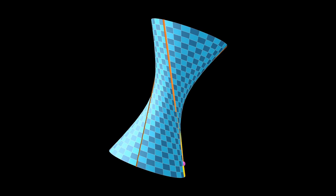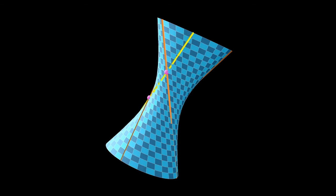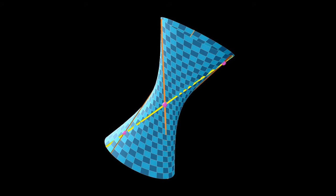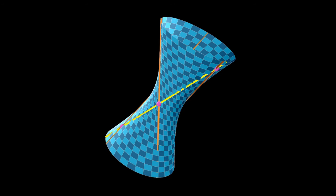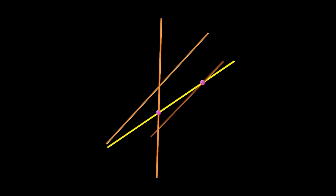Since all three of our given lines are on one of the rulings, we now know that any line on the opposite ruling intersects all three of our given lines. This is how we know there are infinitely many lines intersecting three given lines.